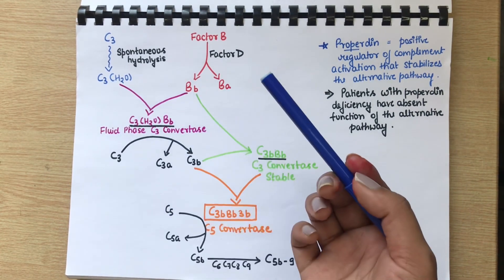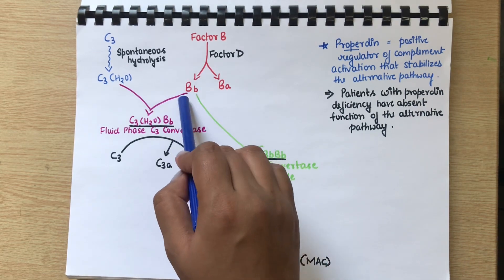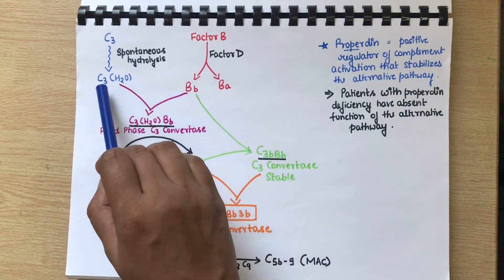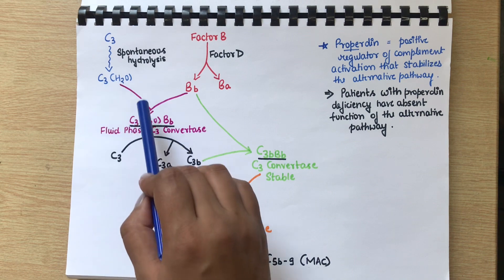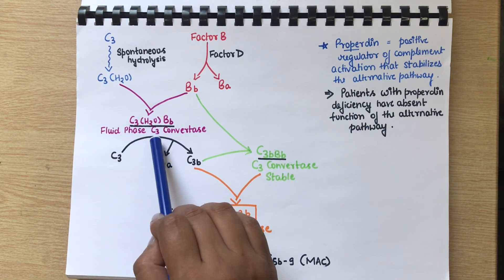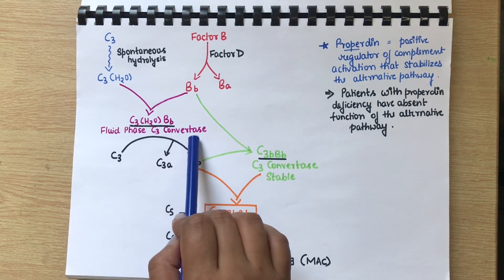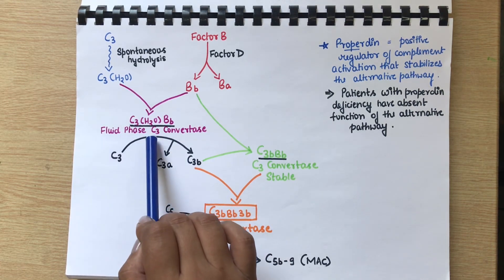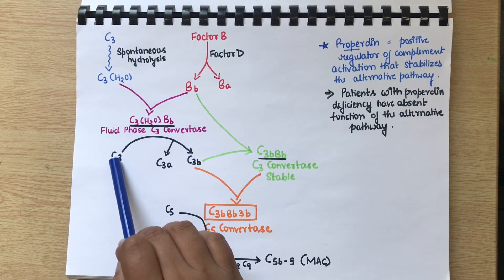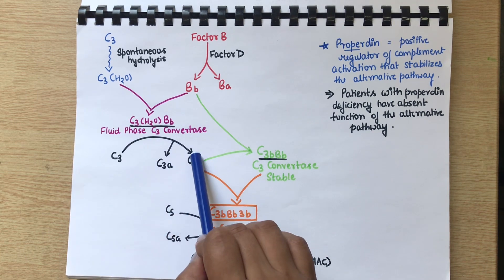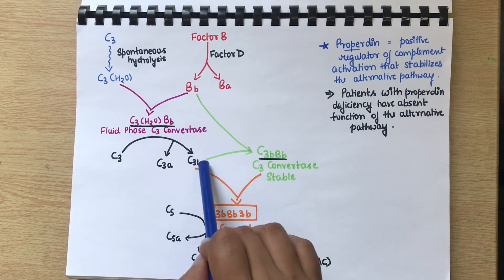The activated part, which is Bb, will combine with hydrolyzed C3 and they will form fluid phase C3 convertase. As the name suggests, it will be cleaving C3. In presence of fluid phase C3 convertase, C3 will be cleaved into C3a and C3b.